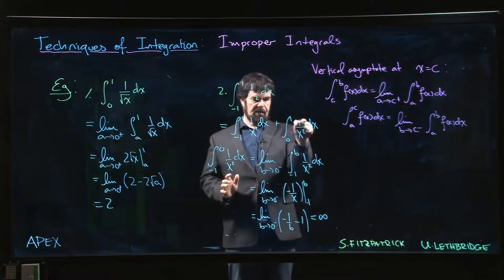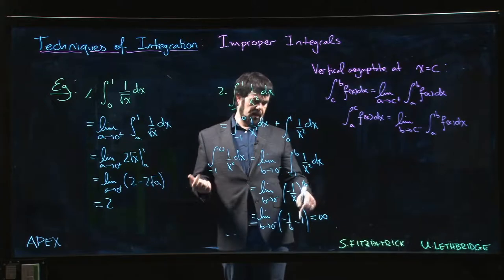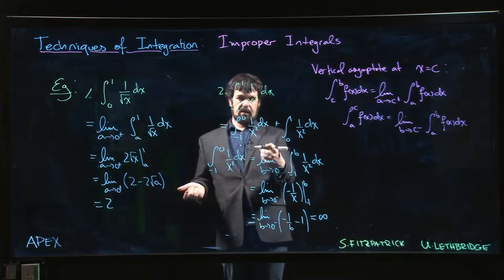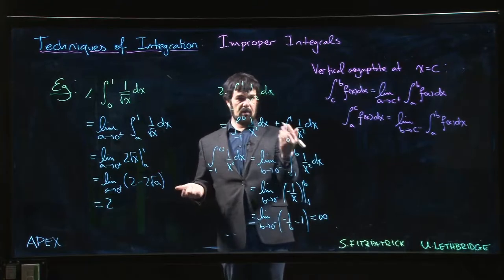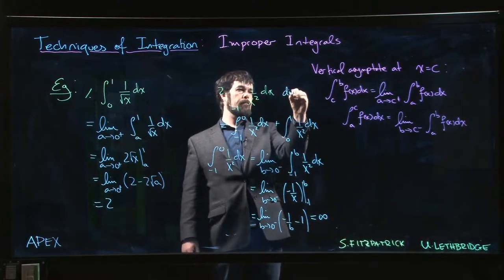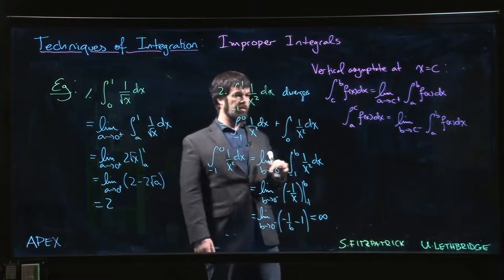Now we'd also get infinity for the other one as well, so both of them become infinite. But it's enough to have just half of it diverge. So if either of the two halves diverge, in this case both halves diverge, but as long as one of them does, then we can say that the integral overall diverges.